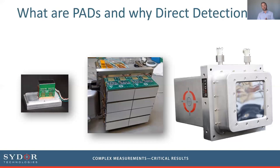In direct detection, the substrate at the front of the device — such as silicon or cadmium telluride — directly converts the incoming x-rays into charge, which is then read out.